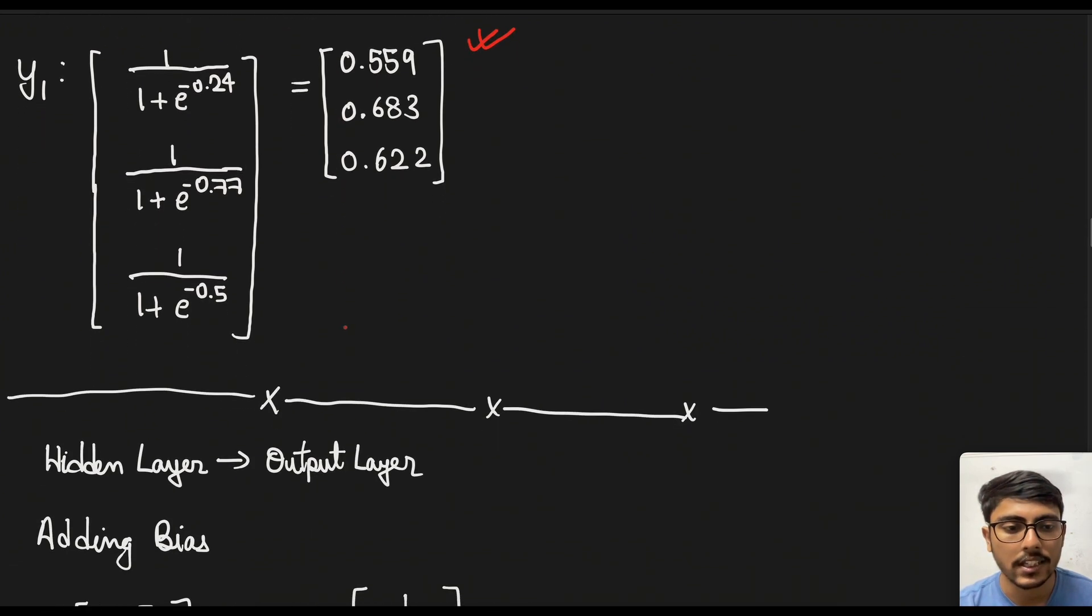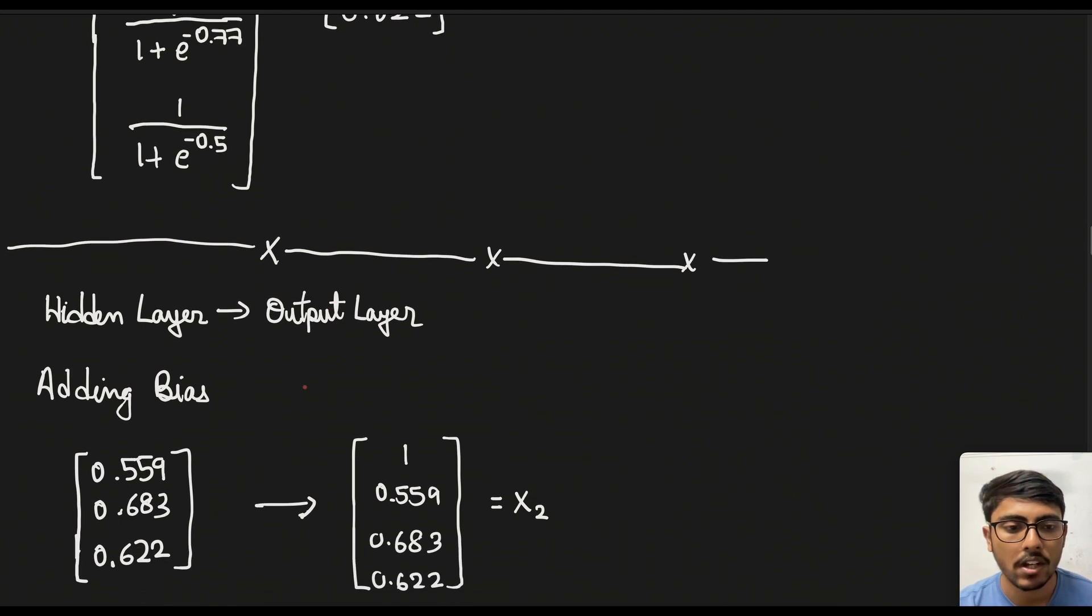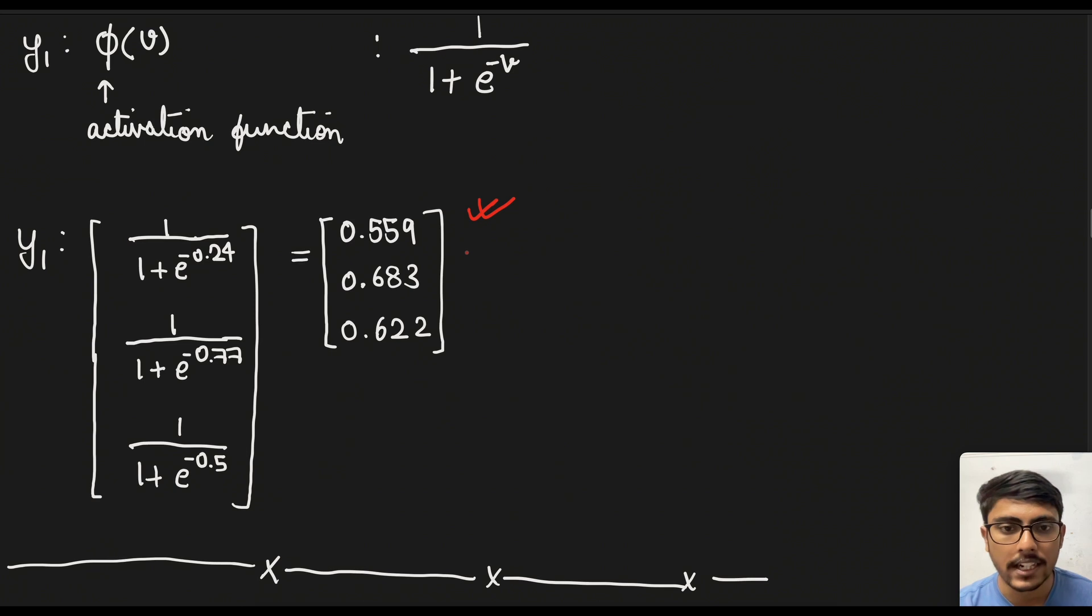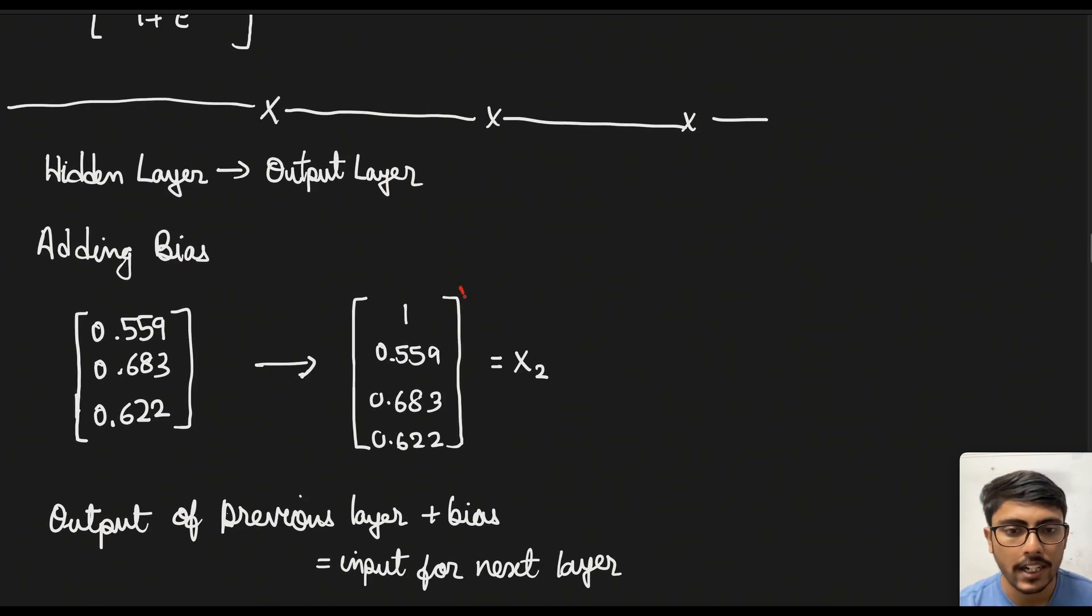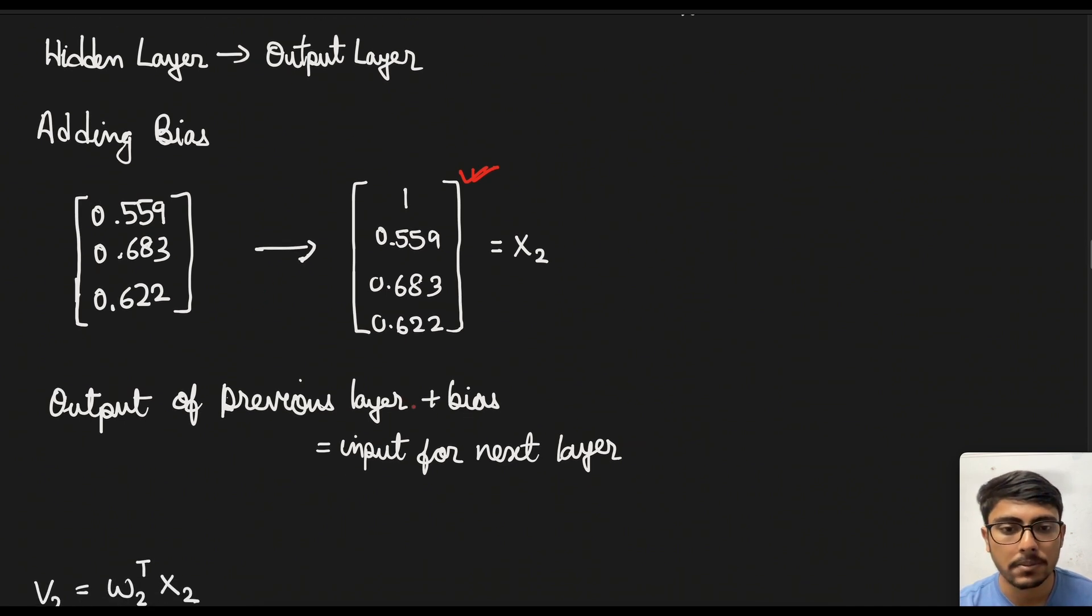Now let's go on to the next part which is the hidden layer to the output layer which is the second step in the feed forward mechanism. Now in this case first we will add bias to the output of the first step. That is this gets added to a bias. Now we get this as x2. Similarly the output for the previous layer plus bias will become the input for the next layer.